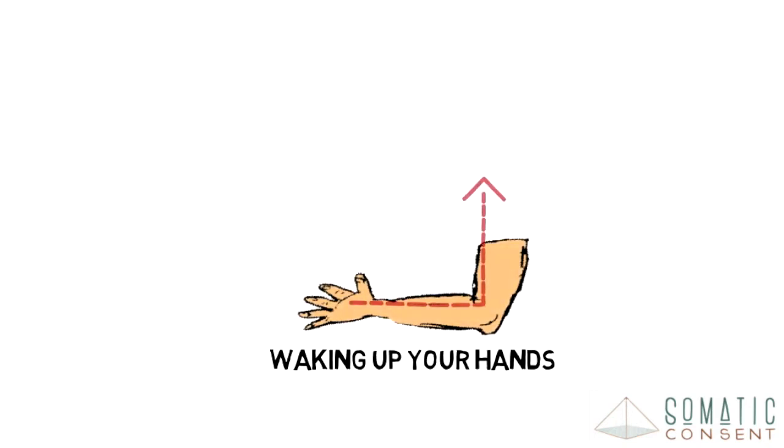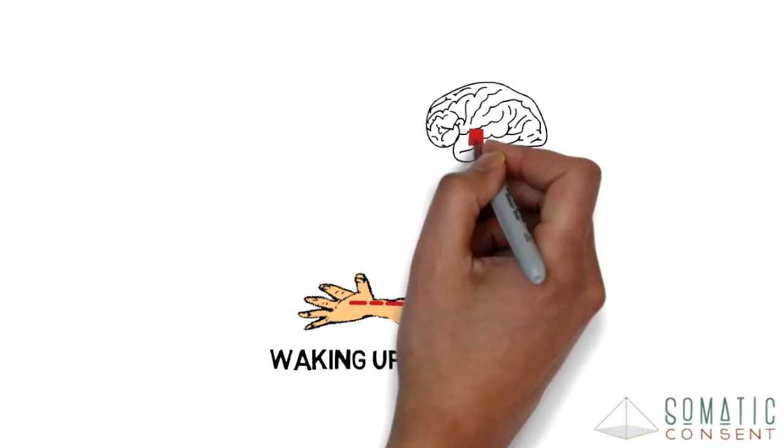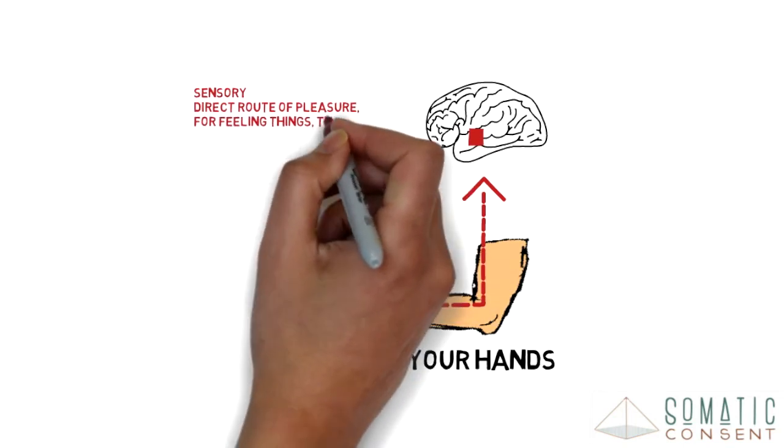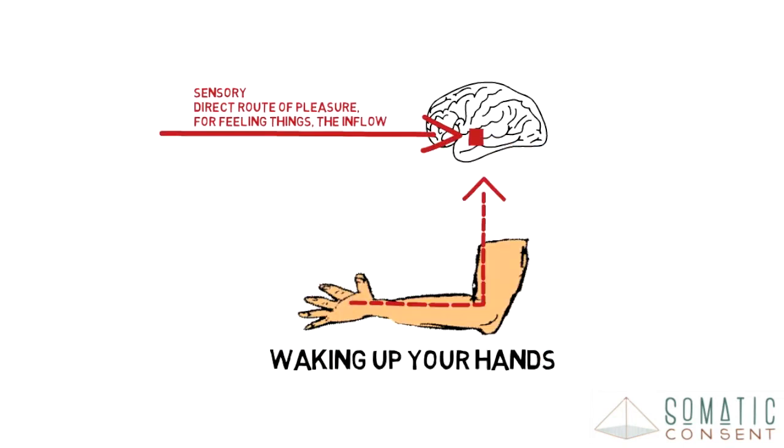When you touch something that feels nice, the sensory root is sending pleasurable signals into your brain and is lighting up your pleasure center. This is the direct route of pleasure for feeling things, the inflow.